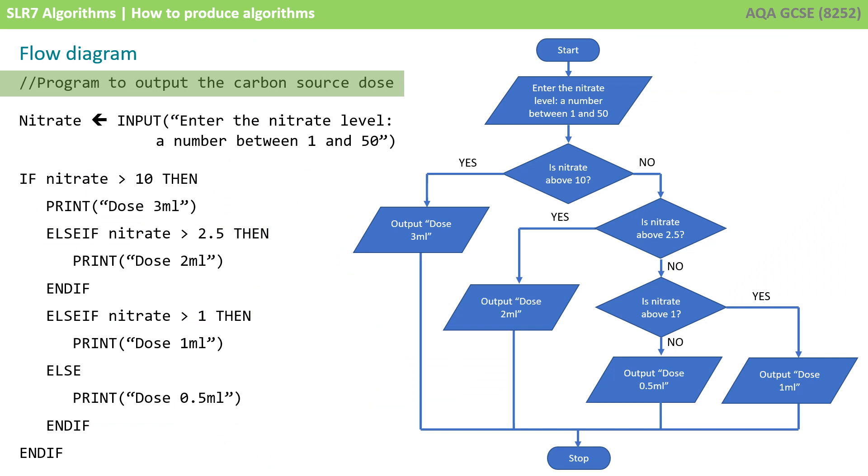We can, of course, express this algorithm in pseudocode. Here's a comment just to explain the purpose of the program. Next, we've got a variable called nitrate, which is entered from the keyboard. We ask, if nitrate is greater than 10, then dose 3 mil.